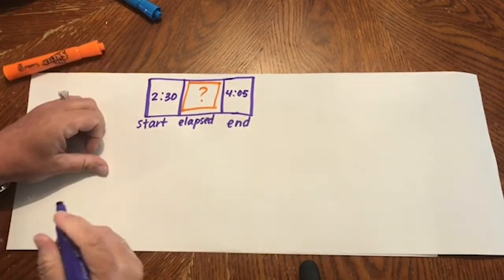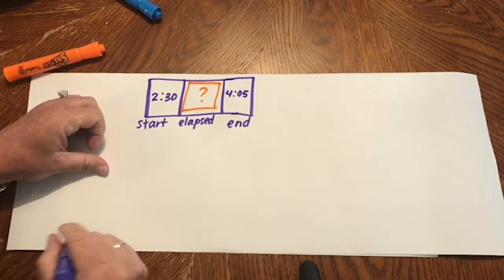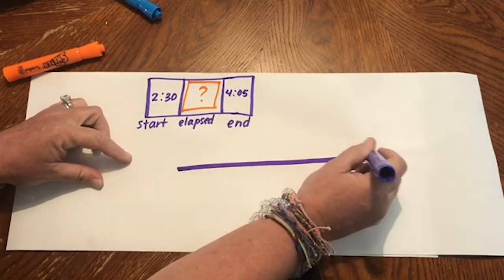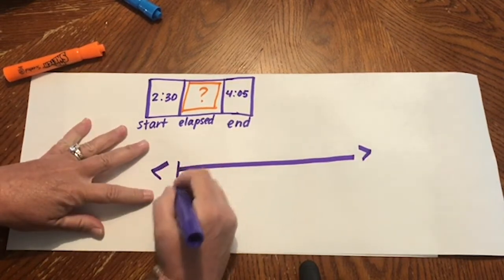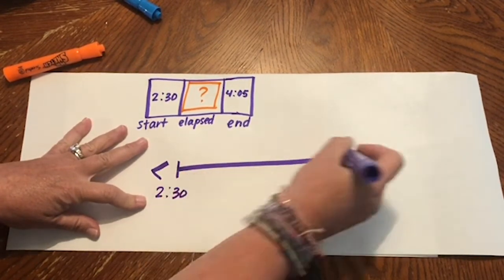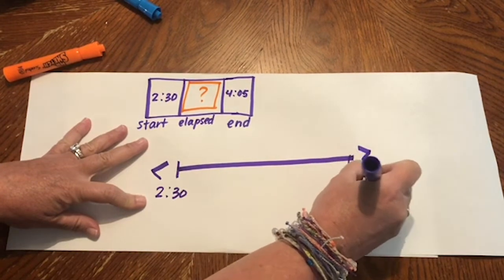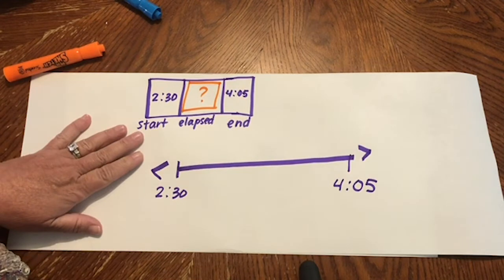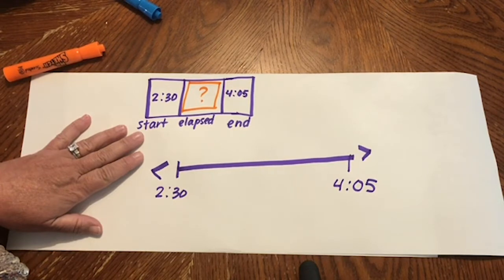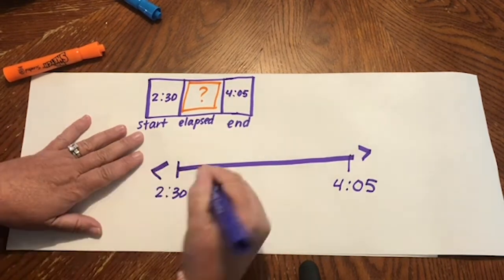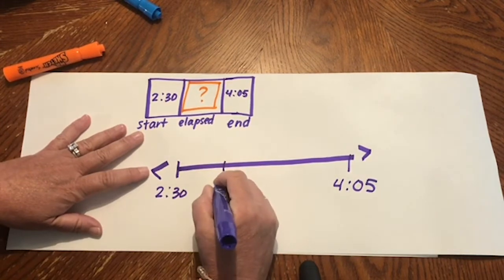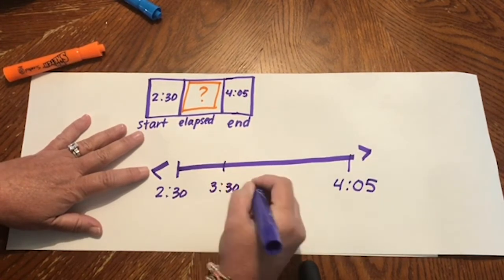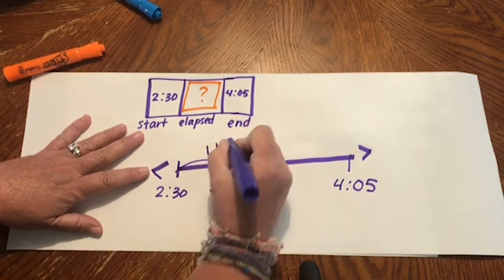The strategy I like to use best to help me figure out elapsed time is a timeline. I'll put the start time here and the end time at the end of the number line. The thing about a number line is people can group or chunk the minutes and hours in the way that best works for them. I prefer to start by going to the next whole hour. The next whole hour after 2.30 would be 3.30. That represents one hour of elapsed time.